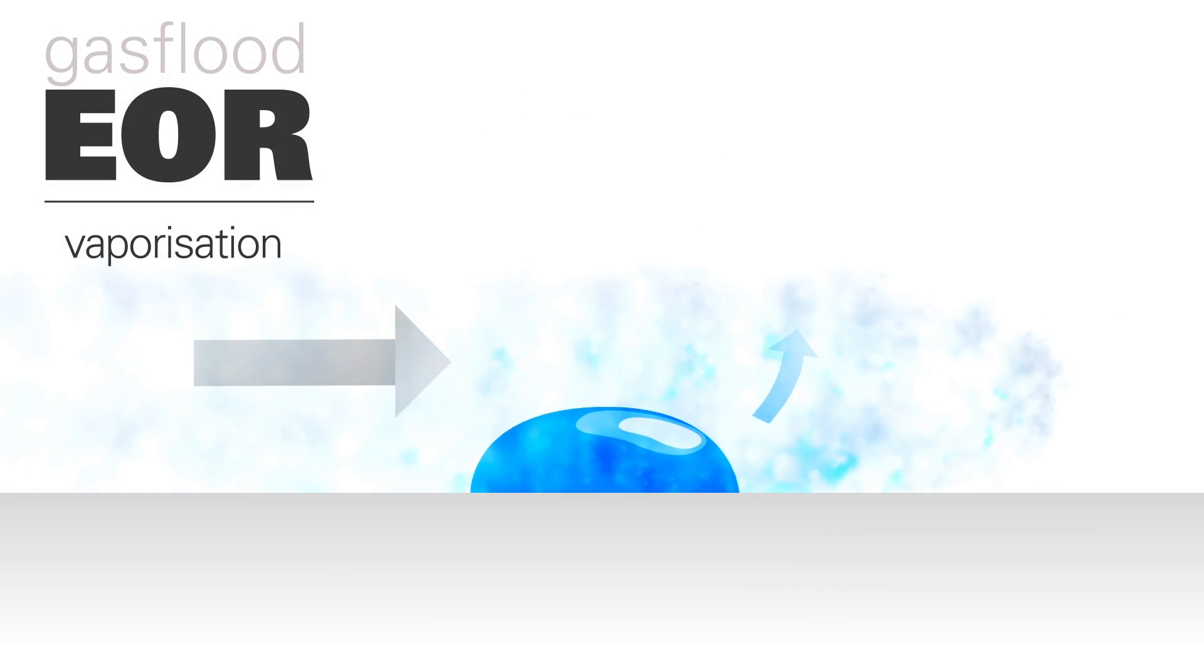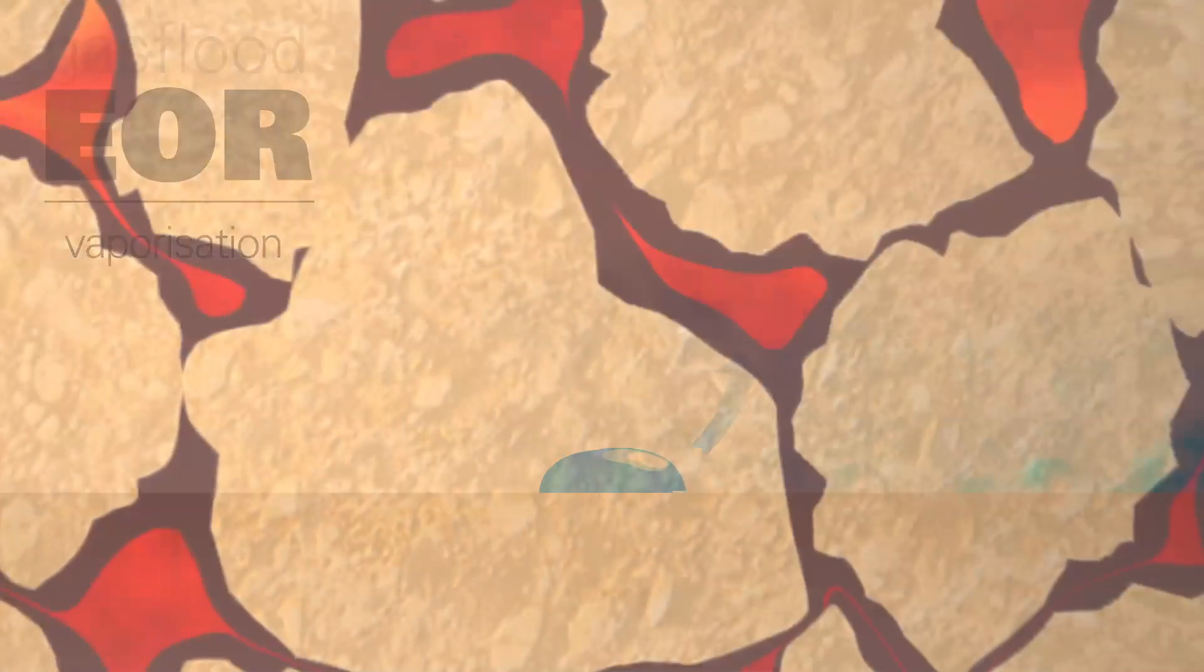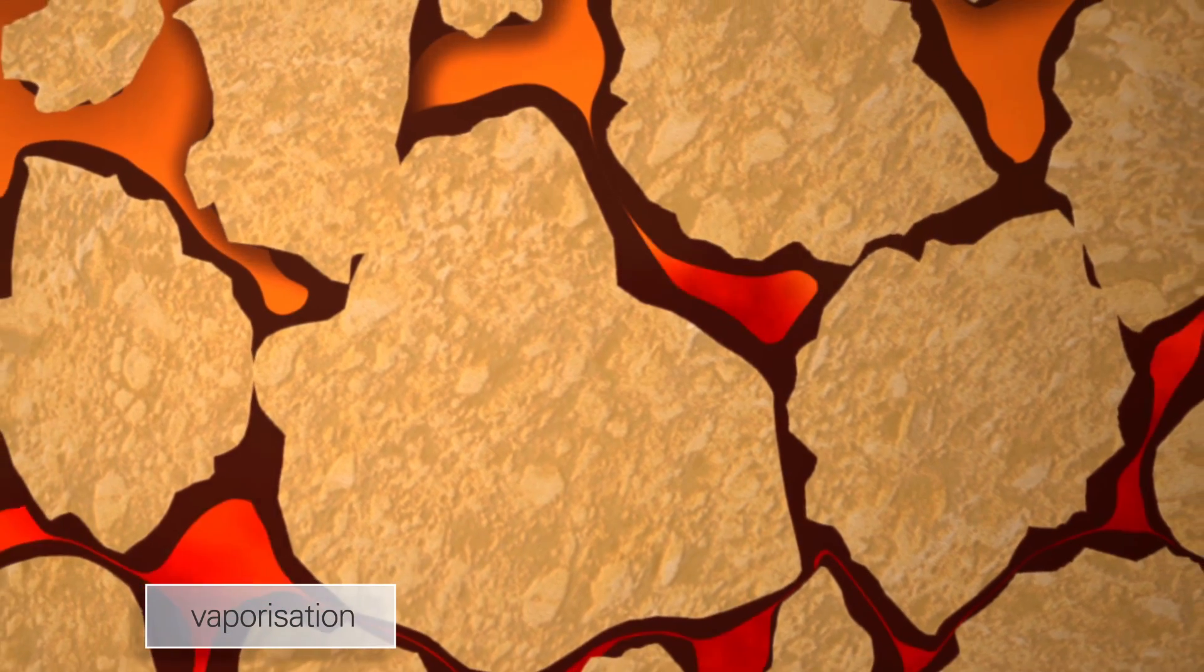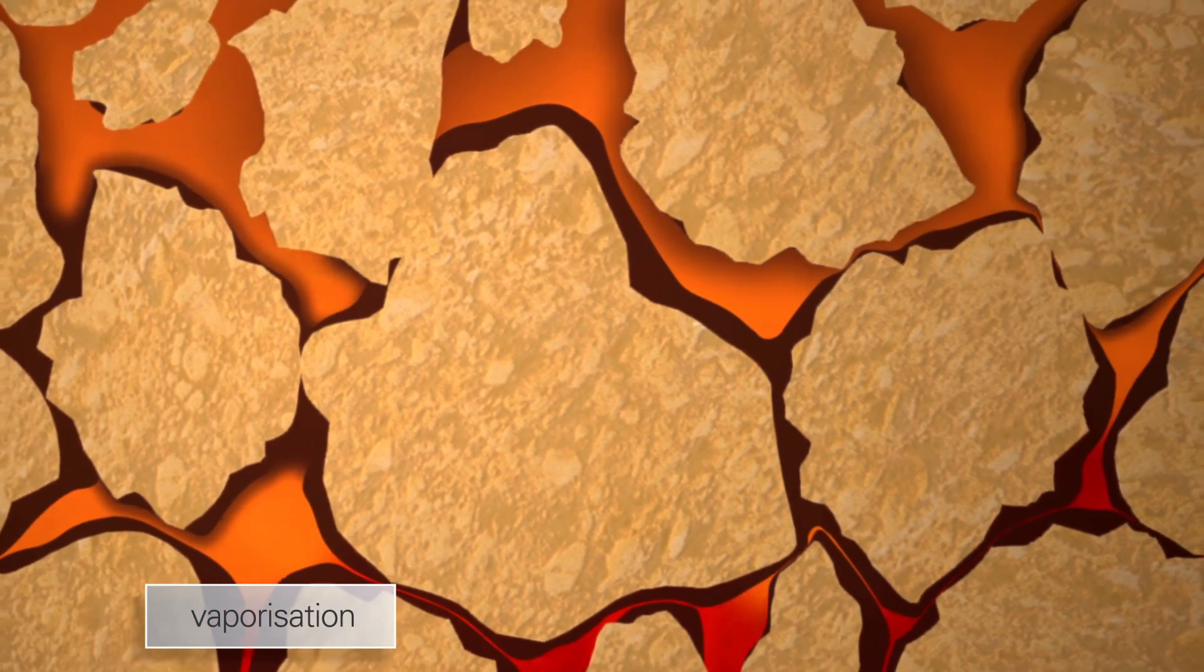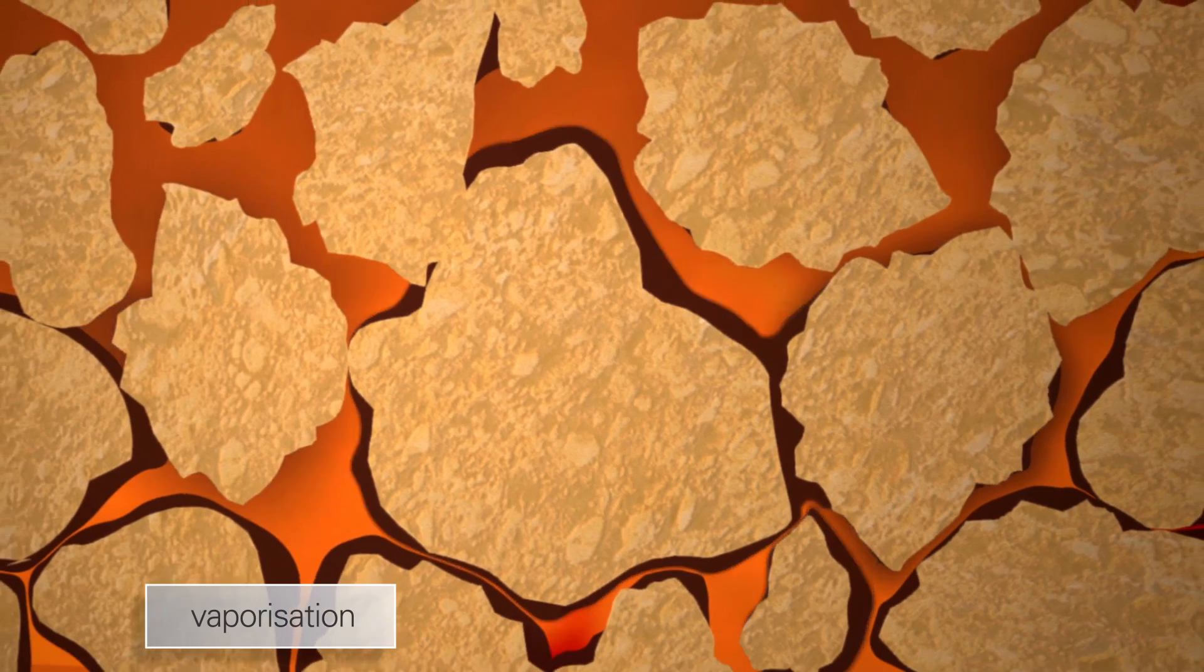The process is similar to drying a film of water by evaporation into a moving stream of air. The lighter parts of the residual oil vaporize into gas passing over the surface until the gas becomes saturated.